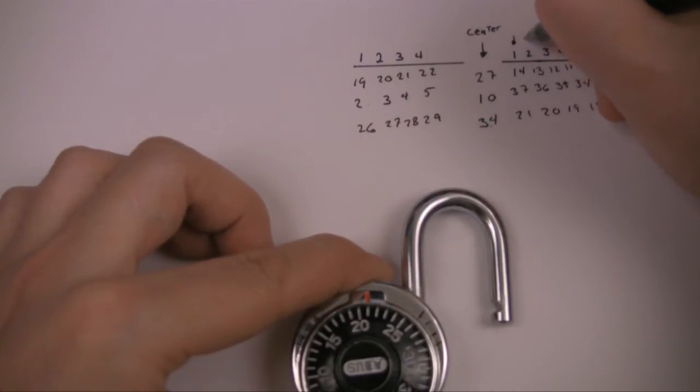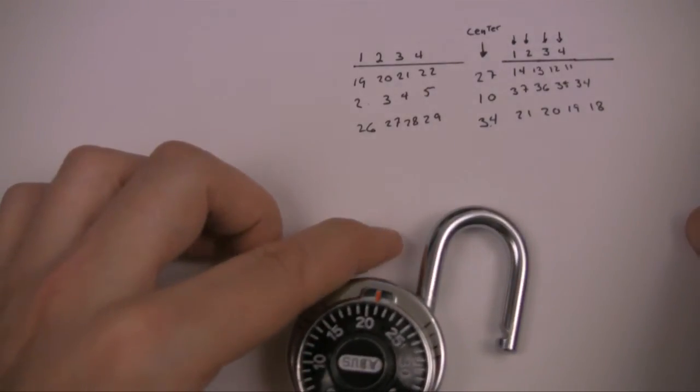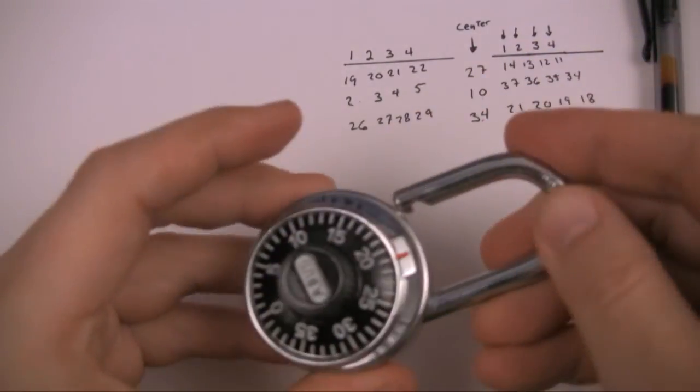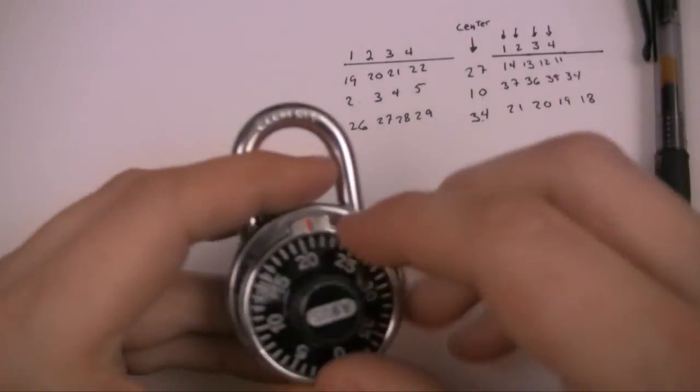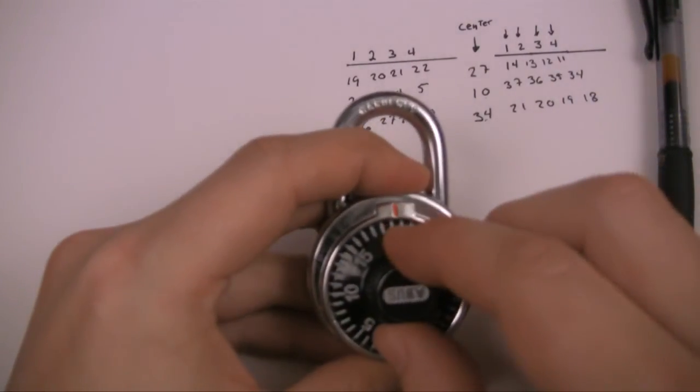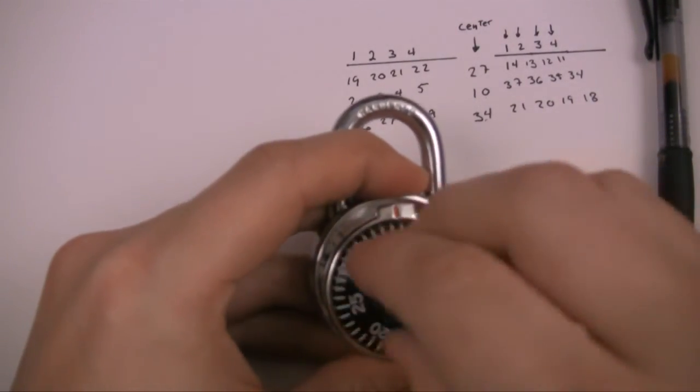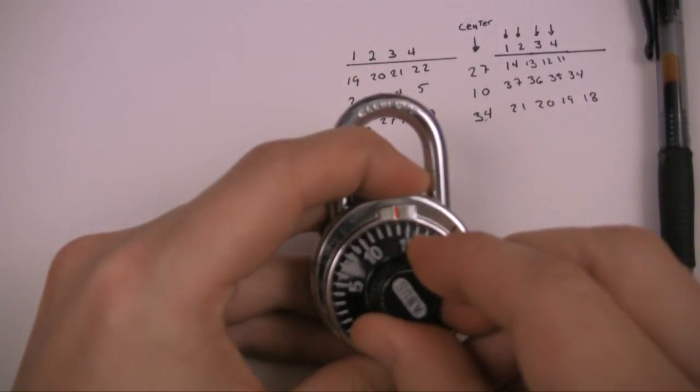So let's lock the lock and try it out. Turn around a couple times clockwise, we line up to 14.